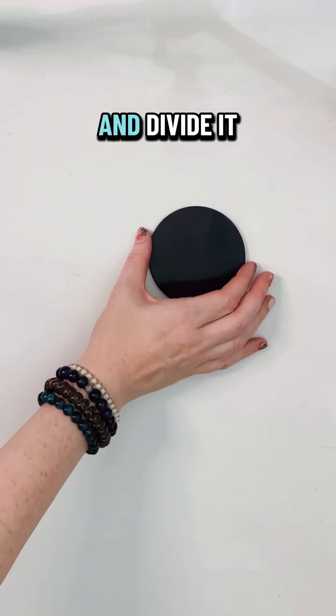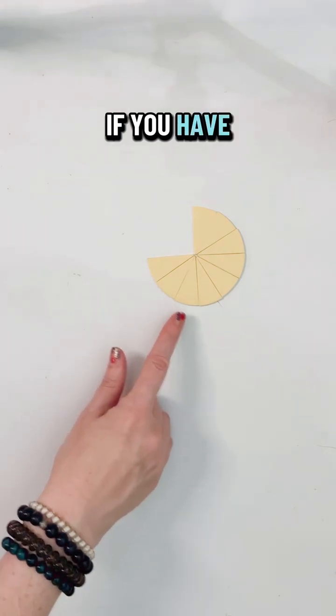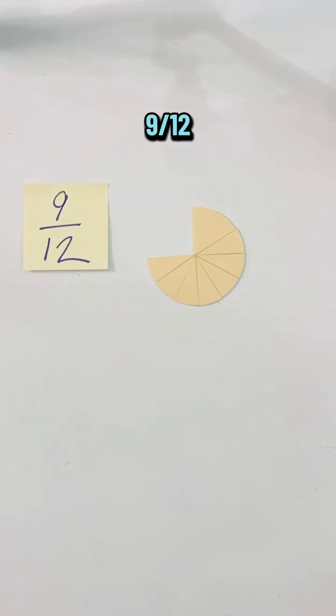If you take a whole and divide it into 12 equal parts, you have twelfths. If you have nine of those 12 parts, you have nine twelfths.